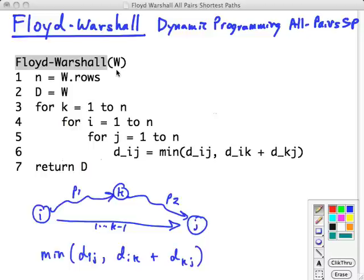We give it a weight matrix W, and then we find out how many rows it has or how many vertices, and then we make a distance matrix which will be a copy of W. Notice that this D at this point is giving us all the shortest paths from i to j that don't involve any intermediate vertices. That's exactly what the adjacency matrix is. For each pair i, j of vertices, do they have a direct link between them?